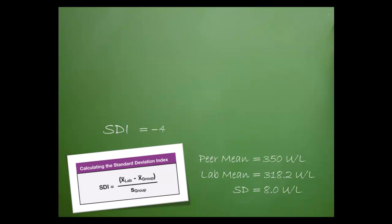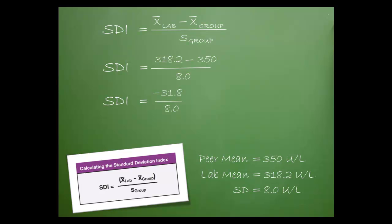The SDI is negative 4. Here's how I got that figure. First, I substituted the values into the formula. Then I subtracted the group mean from the lab mean. Finally, I divided.